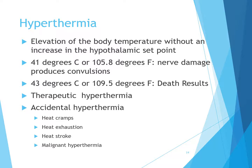Hyperthermia is an elevation of body temperature without an increase in the hypothalamic set point. It can produce nerve damage, coagulation of cell proteins, and death. It may be therapeutic, accidental, or associated with stroke or head trauma, and is not mediated by pyrogens. It is defined at 41°C (105.8°F), at which nerve damage produces convulsions. At 43°C (109.5°F), death results.